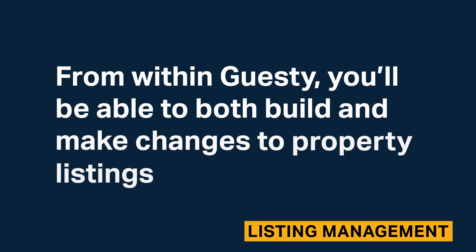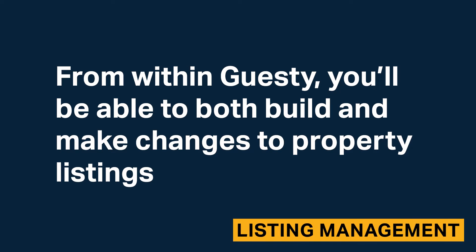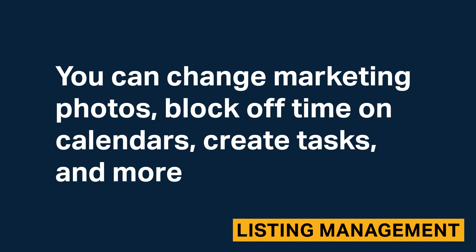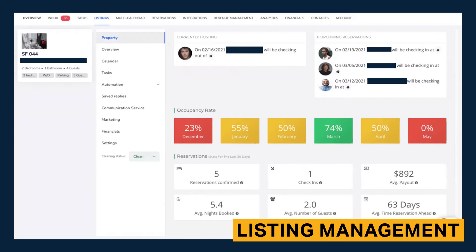From within Guesty, you'll be able to both build and make changes to property listings. You can change marketing photos, block off time on calendars, create tasks, and more. When you select individual listings, you'll be provided with a property overview that's much like the overall Guesty dashboard. This overview provides you with information like occupancy rates per month, upcoming reservations, the average payout, and more.